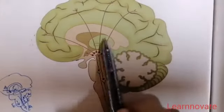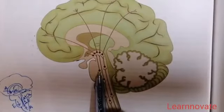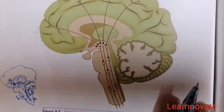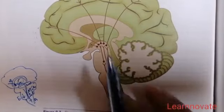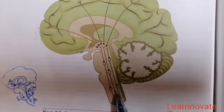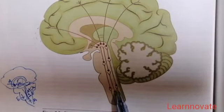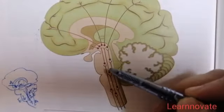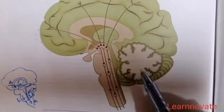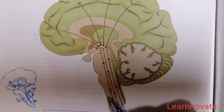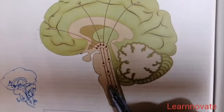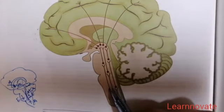The cerebellum also has afferent connections with the reticular formation. For the efferent connections, the reticular formation connects with the spinal cord via the reticulospinal tract. The second efferent pathway is through the reticulobulbar fibers — when these fibers go downward, they synapse on the cranial nerve nuclei located in the midbrain, pons, and medulla, thereby controlling the activity of those nuclei.